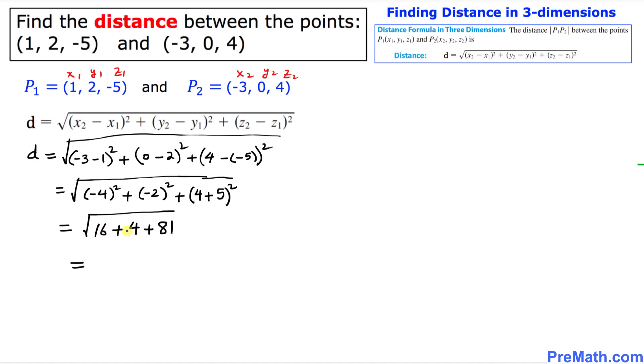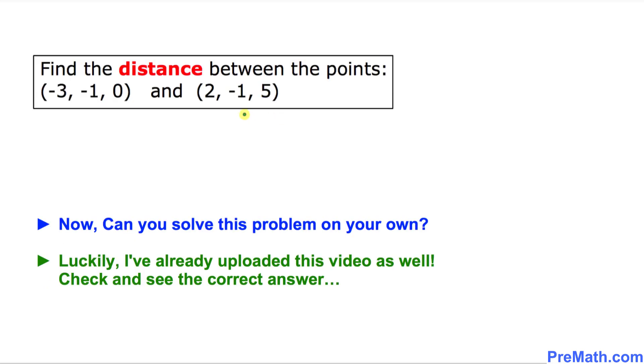And if we put it everything together, that is going to be the square root of 101. So our distance turns out to be the square root of 101.